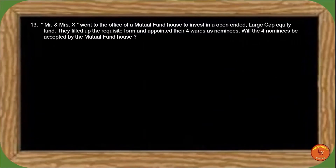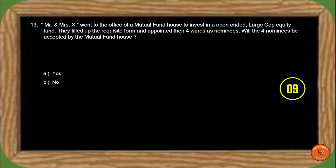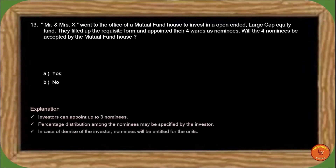Next question: Mr. and Mrs. X went to the office of a mutual fund house to invest in an open-ended large-cap equity fund. They filled up the requisite form and appointed four nominees. Will the four nominees be accepted by the mutual fund house? Investors can appoint up to three nominees and can specify the percentage distribution among nominees. In case of the investor's demise, nominees are entitled to the units. Four nominees cannot be appointed in mutual fund investment. So the correct answer is option B, no.